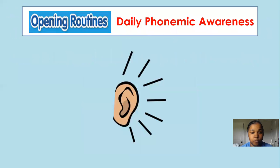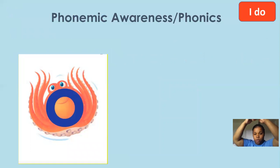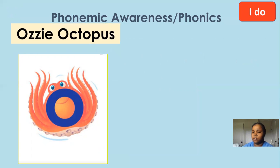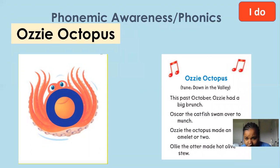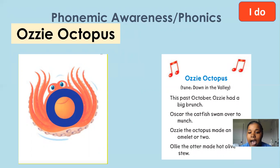Okay, we have the letter O and we see an octopus — he has many legs, many arms. He has eight arms. It says Ozzie Octopus, so I'm going to read you a poem and you're going to hear all of these 'ah' sounds. It says: 'Ozzie Octopus — this past October, Ozzie had a big brunch. Oscar the catfish swam over to munch. Ozzie the octopus made an omelet of eggs or two. Ollie the otter made hot olive stew.'